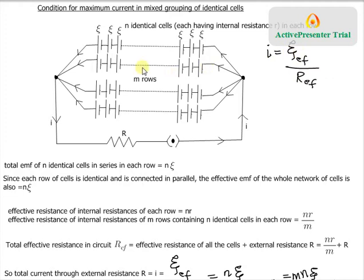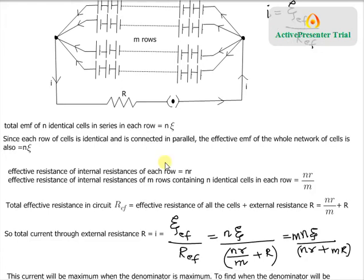We need to find the effective EMF and effective resistance for the entire circuit. First, find the effective EMF for each row. Each row has n identical cells with the same EMF η connected in series, so their potentials add up — the effective EMF for each row is n·η. Since all m rows are connected in parallel and have the same EMF, the effective EMF for the entire circuit is also n·η.